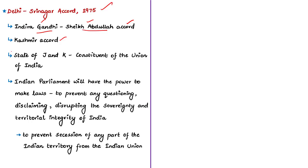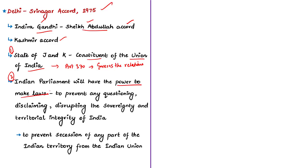Two important provisions of the Kashmir Accord: first, the state of J&K is a constituent of the Union of India and its relations with the Union shall be governed by Article 370 of the Constitution. Second, Parliament will have the power to make laws to prevent any questioning, disclaiming, or disrupting the sovereignty and territorial integrity of India, or to prevent secession of any part of Indian territory from the Union. This concludes the discussion on the abolition of the J&K legislative council.